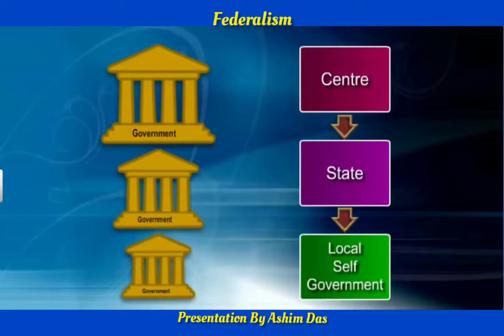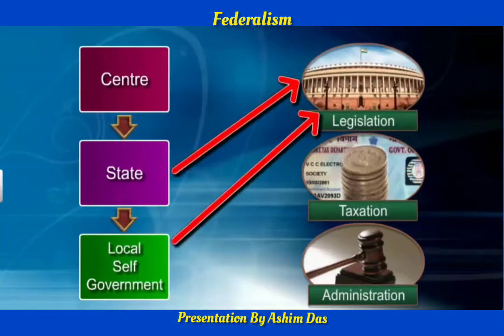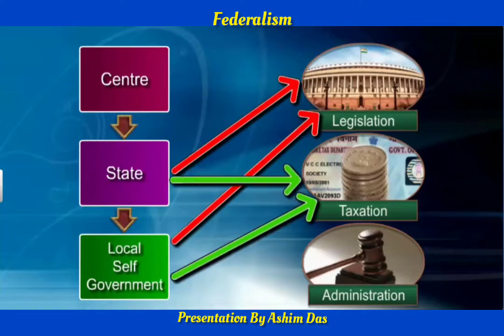The central government, the state government, and as an exception in India, a third tier or local self-government. In federalism, each tier has its own jurisdiction in specific matters of legislation, taxation, and administration.